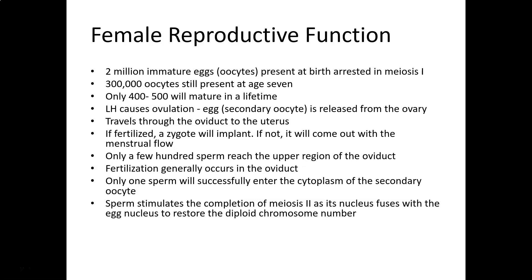Most of the time, if the egg gets fertilized it happens somewhere along the oviduct. If fertilized, it forms a zygote and implants; if not, it comes out with the menstrual flow. A couple hundred sperm typically reach the upper regions of the oviduct. The vast majority of human fertilizations occur within the oviduct, and only one sperm — actually just the head with the genetic material — enters the cytoplasm of the oocyte, fuses, and completes meiosis.